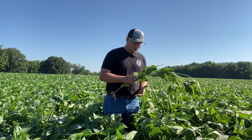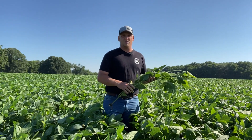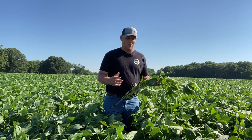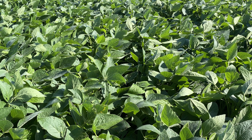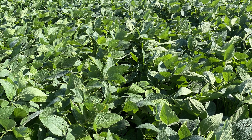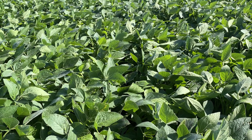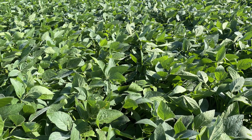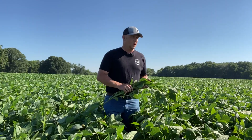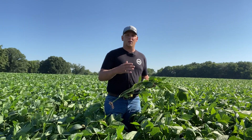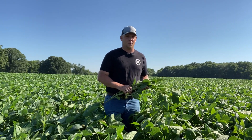On a bean, it really depends on a couple different things. Obviously, most of your labels are going to be R2 to R3. However, as we get out and look at these bean fields, disease pressure is going to be the most important thing that we consider when we decide whether or not we're going to go ahead and make that fungicide pass.